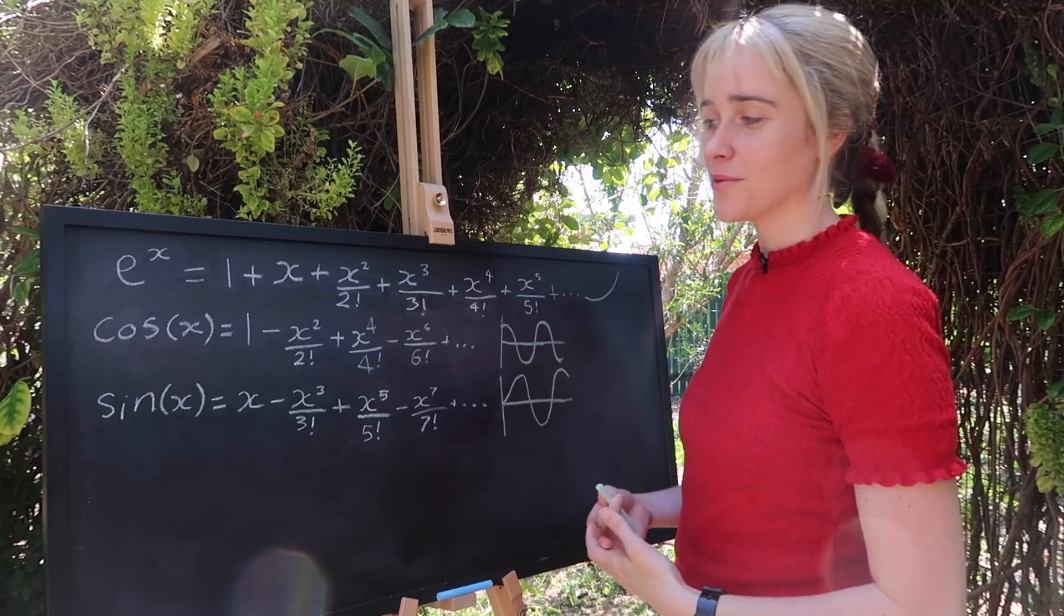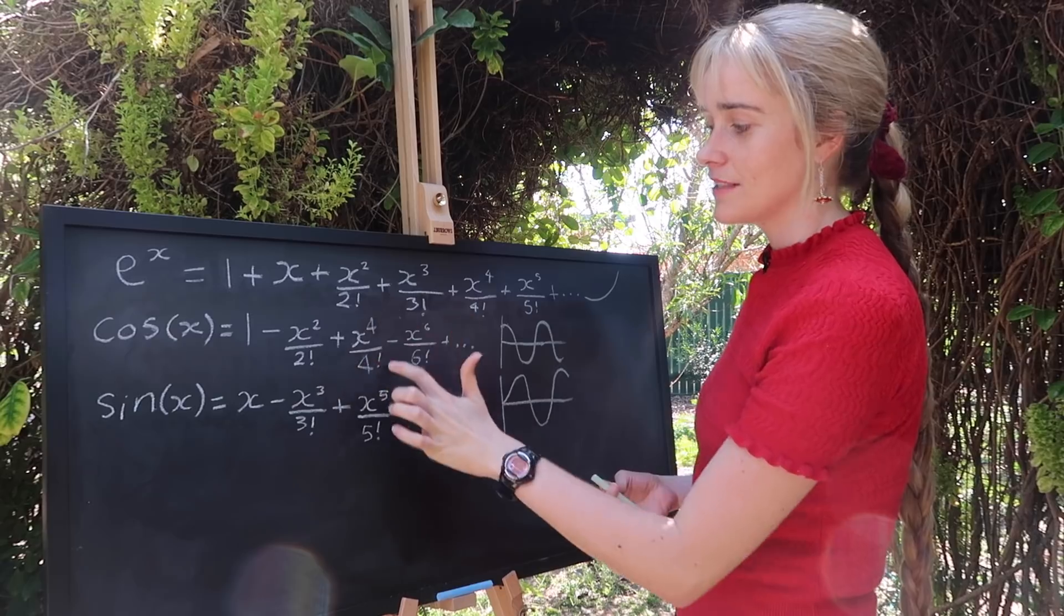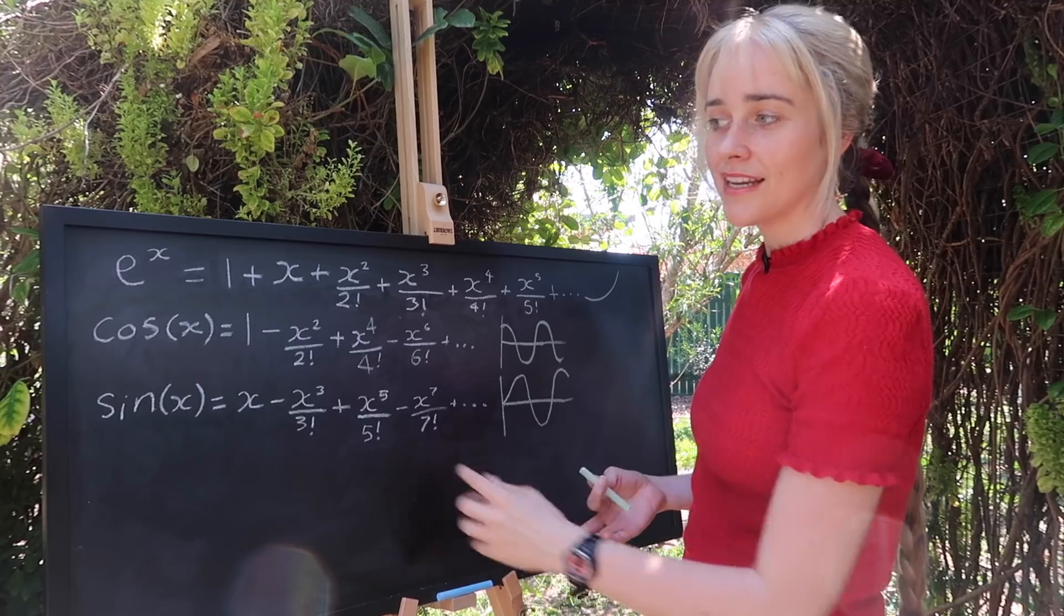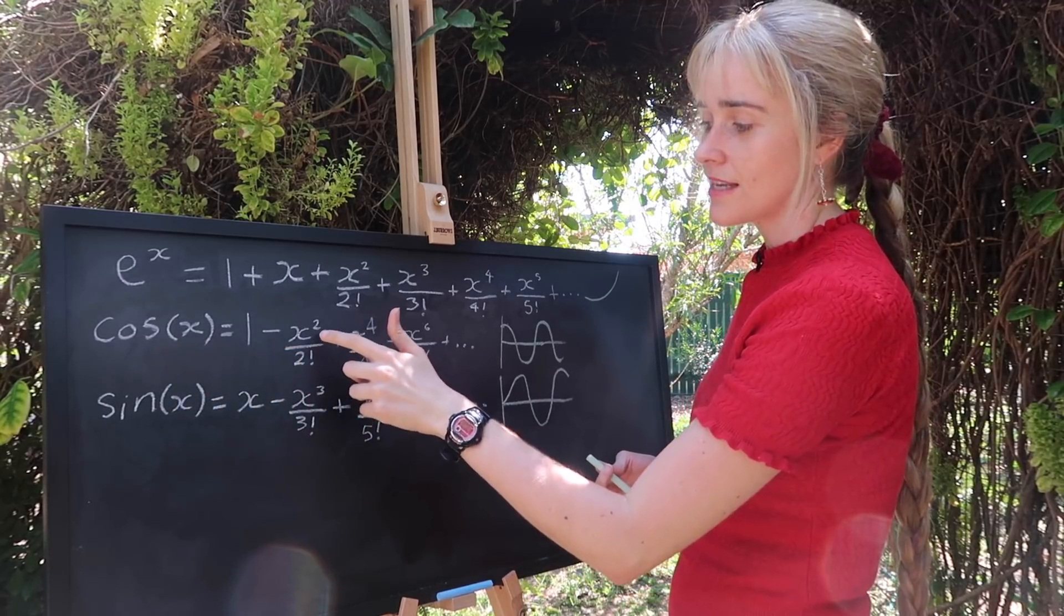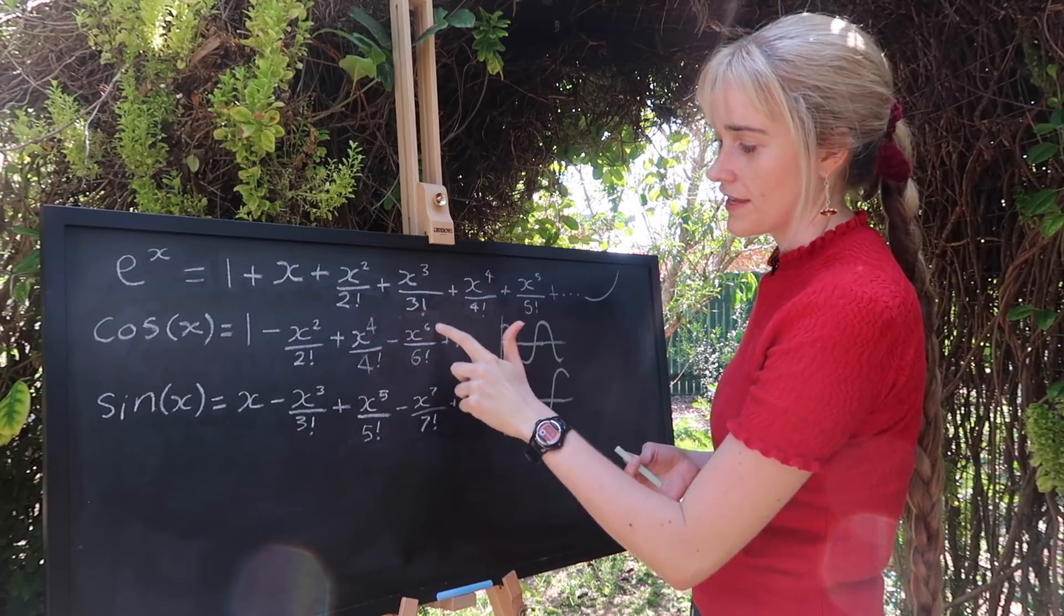Now you might notice a few similarities between our functions. They all have these similar terms, which are actually x to the n over n factorial. In the case of Cos, his terms are the even terms. x squared, x to the fourth, x to the sixth.